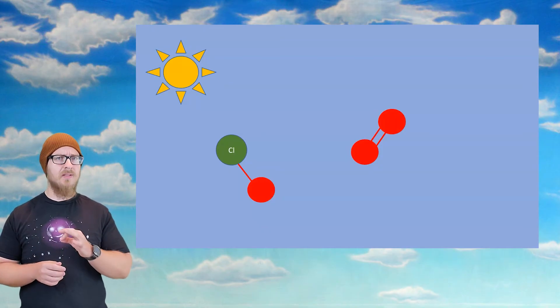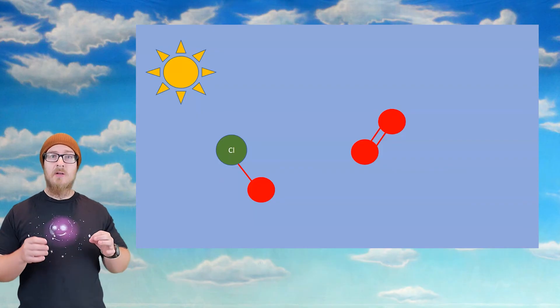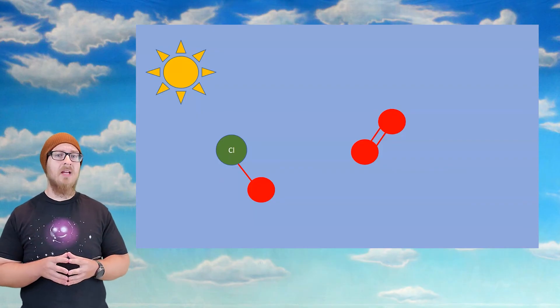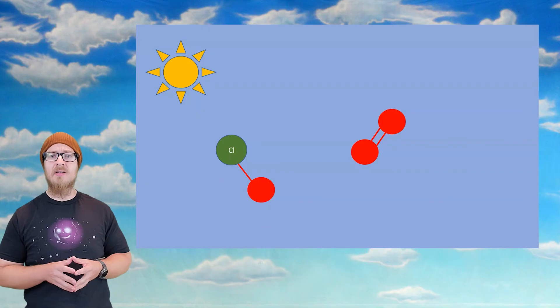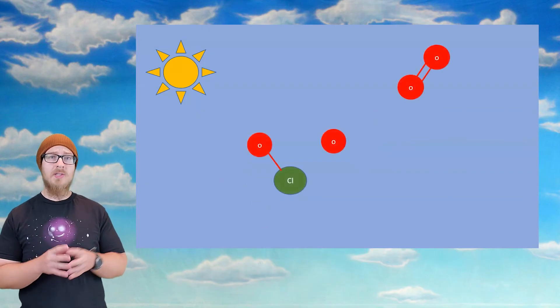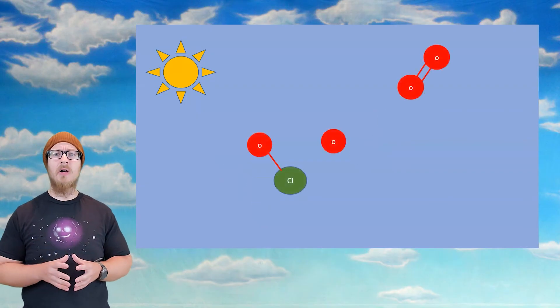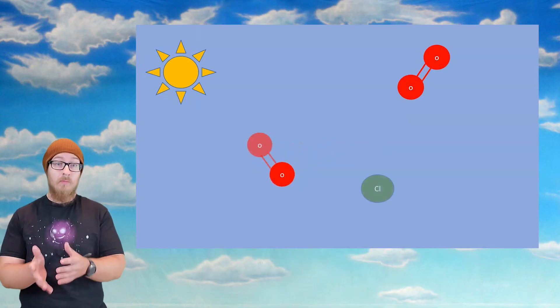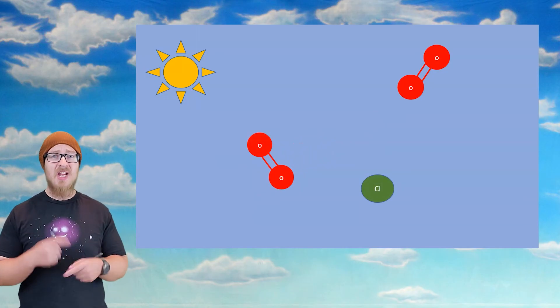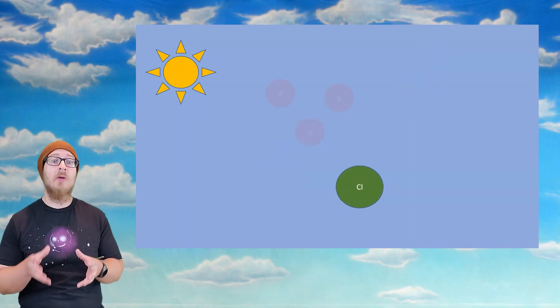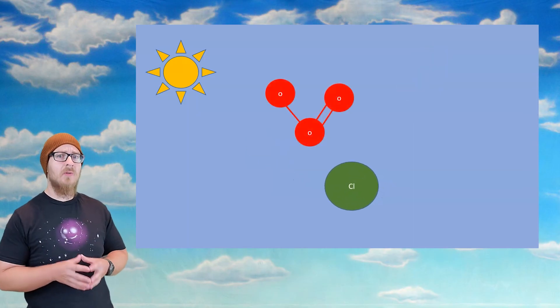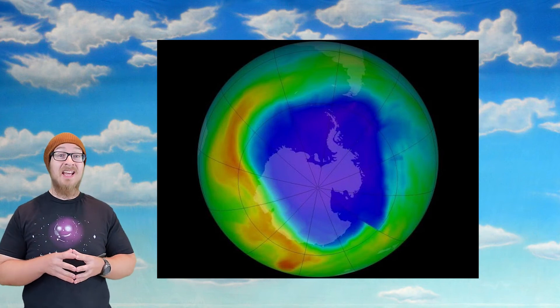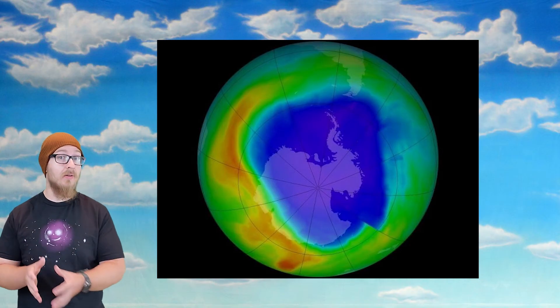Here's where things get worse. Chlorine monoxide reacts with any free radical oxygen atom in the stratosphere, causing the chlorine atom to break off again. This chlorine atom is then free to break apart more ozone. This chain reaction resulted in high rates of ozone depletion, producing a large ozone hole over the Antarctic Pole that extended into parts of Australia, South Africa, and South America.